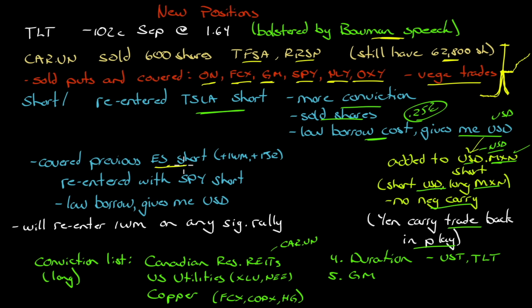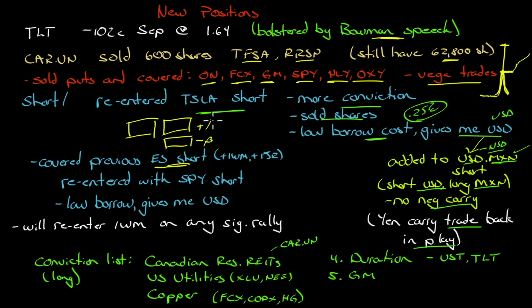I covered my previous ES short at a small profit. The ES short was an extension - I have a number of long positions but I'm nervous about the market. I'd like to extend these long positions but that means more beta, so you combine it with a short beta to get positive beta over there. I also covered IWM and IJR - I was short small caps and they had fallen enough. I got out too soon, but I'm out. I've re-entered the short market position, this time directly shorting SPY because I can use the US dollars.